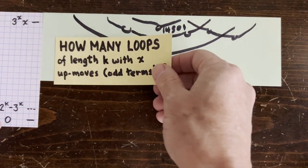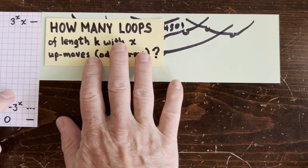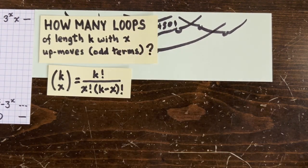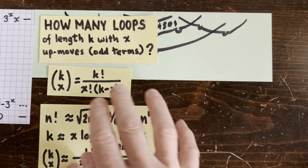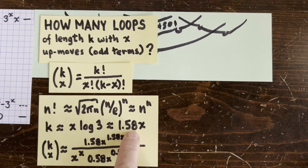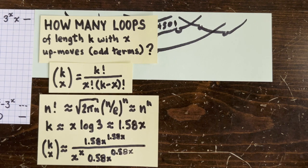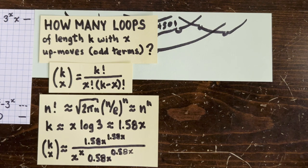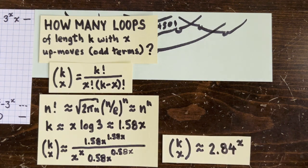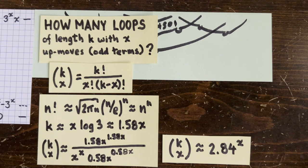First, how many loops of length k with x up loops? It's k choose x, which has a bunch of annoying factorials. Fortunately, we have Sterling's approximation for that. And we're also only considering cases where k is about x log 3. Otherwise, we won't be able to close the loop. We'll wind up too high or too low compared to the starting point. So we can estimate k choose x like this, which simplifies to about 2.84 to the x.